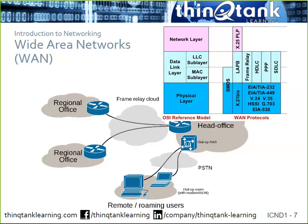The WAN allows us to connect geographically dispersed locations. Another characteristic that differs from a LAN is speed and bandwidth — the WAN is usually a much slower connection, operating at maybe 1 megabit or 10 megabits per second. Very rarely do you see high speeds in the WAN like we see inside the LAN, where we're dealing with 10 gigs and 100 gigs.